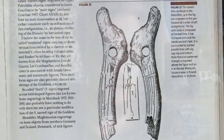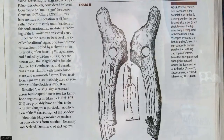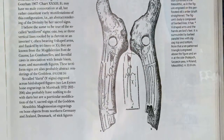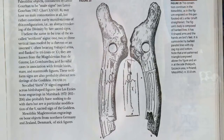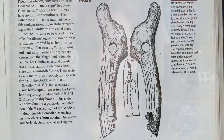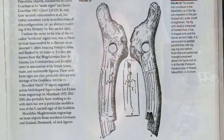The so-called dart or Y signs engraved across bird-shaped figures probably have nothing to do with darts but are particular modifications of the V — the sacred sign of the goddess. Figure 25 shows one side of the bone, its reverse, and the pattern extracted from it. This convention continues into the Mesolithic, as on a figure engraved on a perforated elk's antler shaft-straightener: the figure's body is composed of barbed lines, with V-shaped arms, bird feet, and surrounded by barbed parallel lines with zigzag top and bottom.